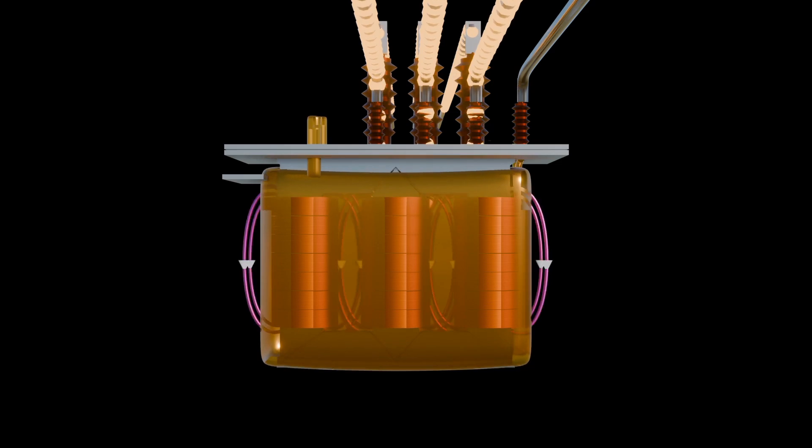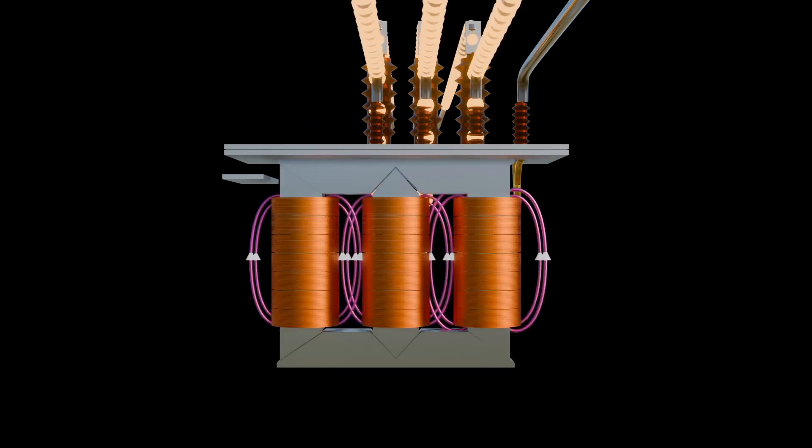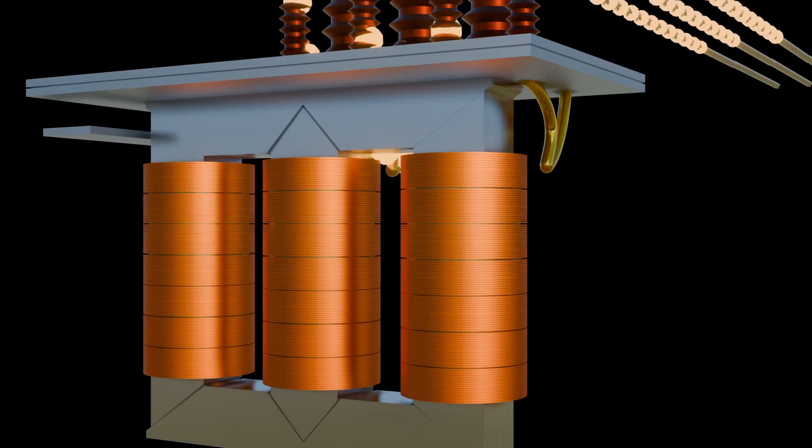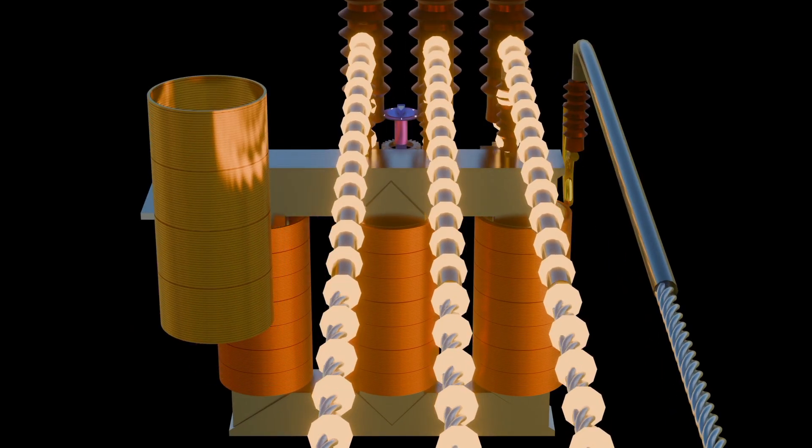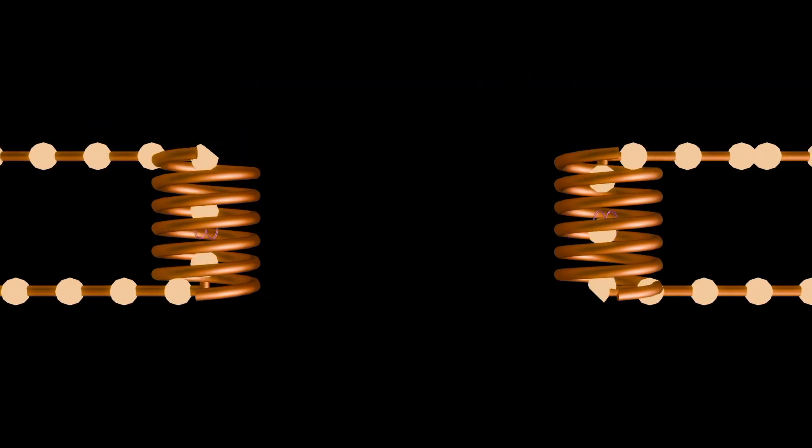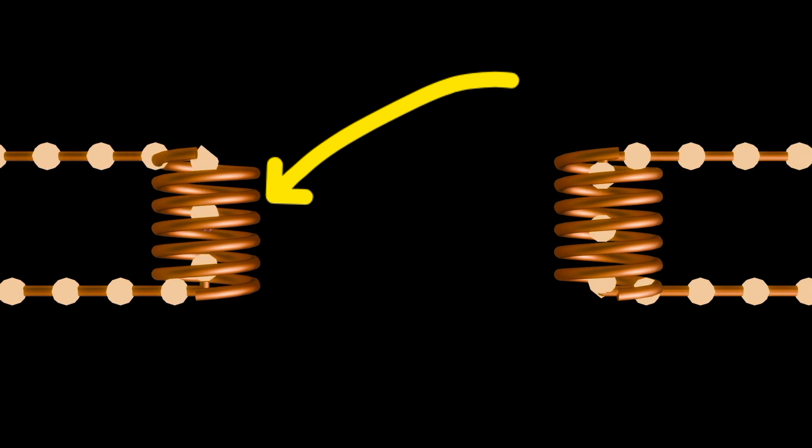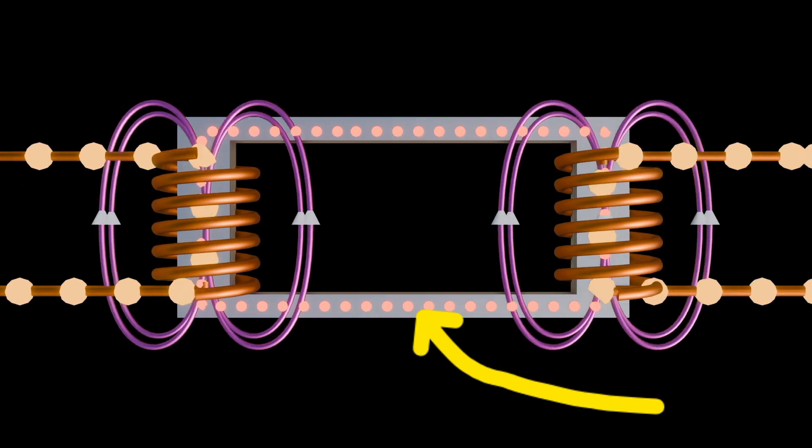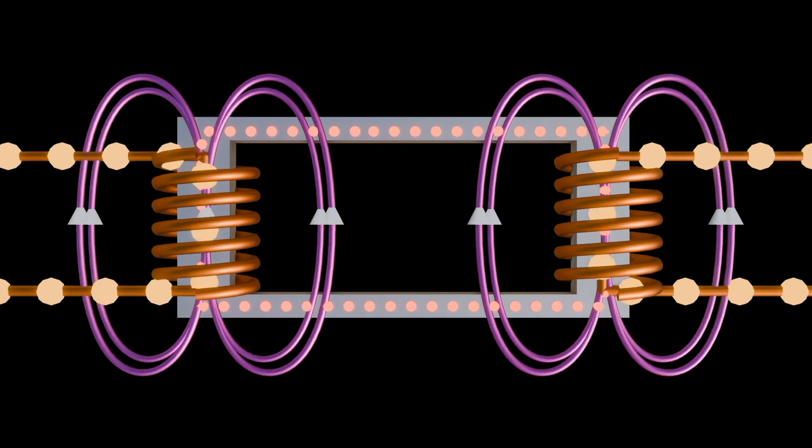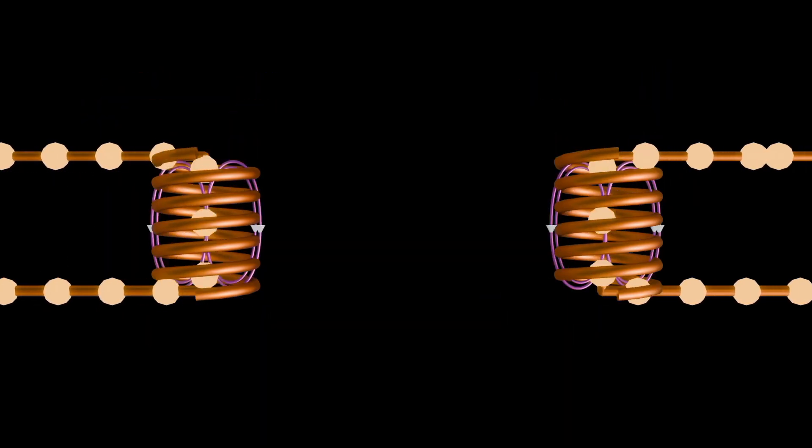A transformer is a crucial electrical device that operates on the principle of electromagnetic induction to transfer electrical energy between circuits. It consists of two coils of wire, known as primary coil and secondary coil, usually wound around a laminated iron core. The primary coils are connected to the input voltage source, while the secondary coil is connected to the load.